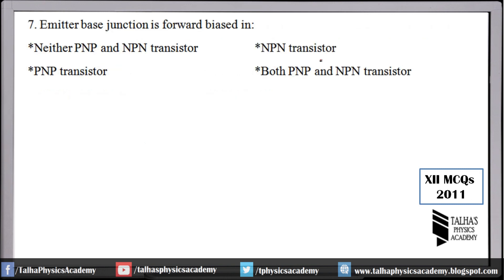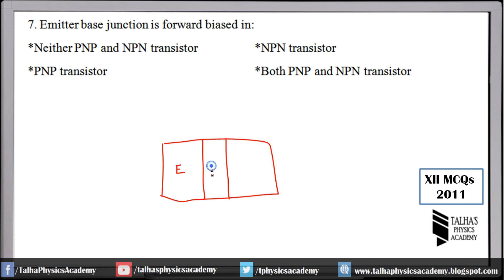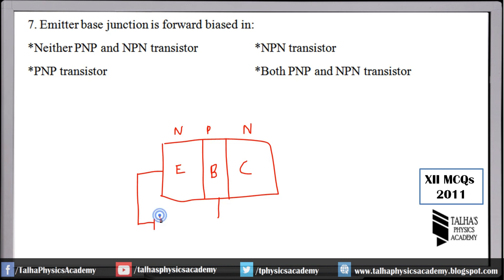Number 7: emitter-base junction is forward biased in a transistor. The transistor has three parts: emitter, base (central), and collector. For the emitter-base junction to be forward biased, in an NPN transistor, the P-side (base) must be at positive terminal and N-side (emitter) at negative. Similarly for PNP, we connect accordingly.